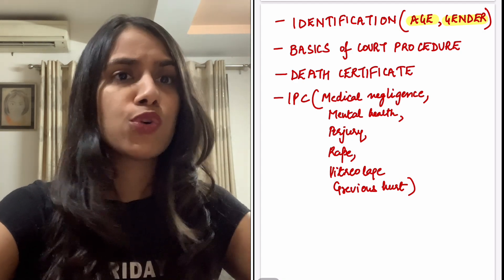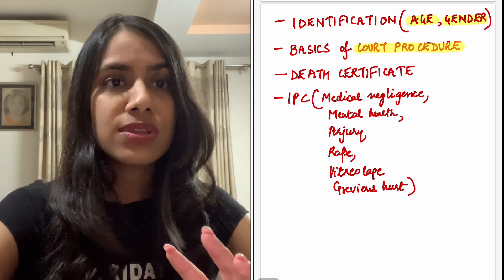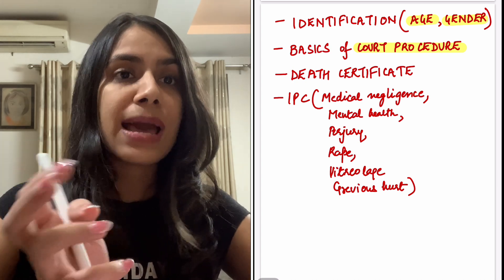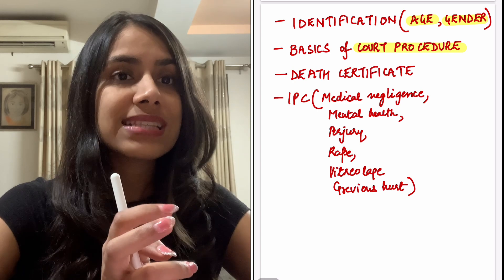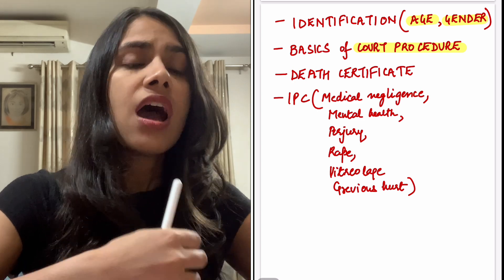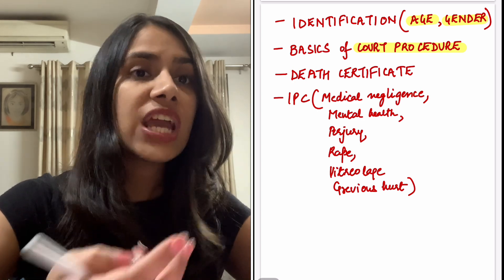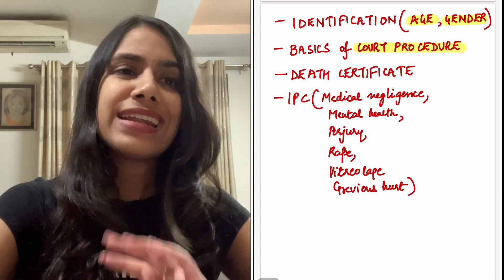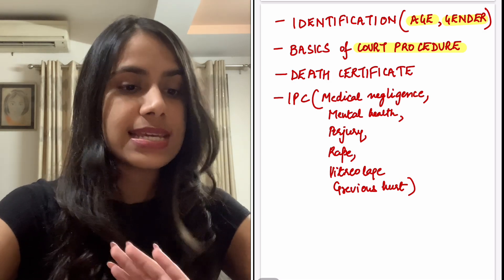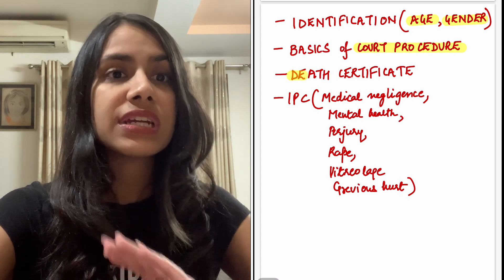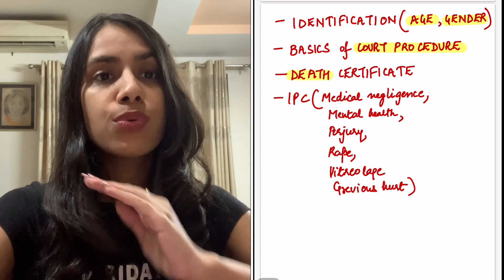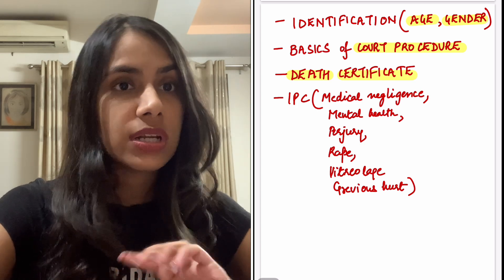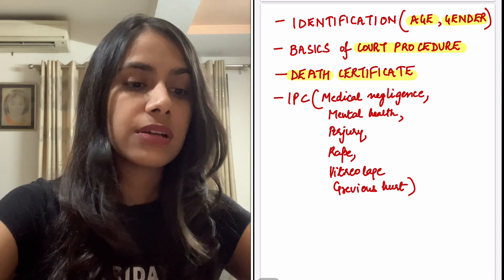Basics of court procedure — these are questions you don't even need to study much because you would know them well: examination, chief examination, cross-examination, leading questions, inquests. These are basic questions you will be able to do for sure — free marks. Then the death certificate and its parts — when you list out the causes of death — is an important area that is frequently tested.